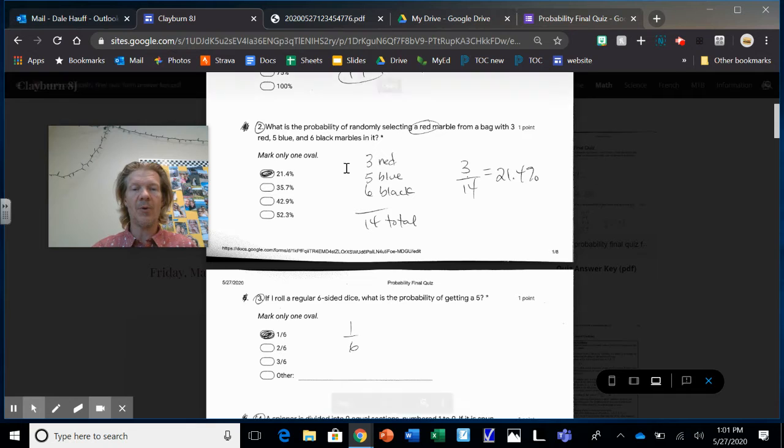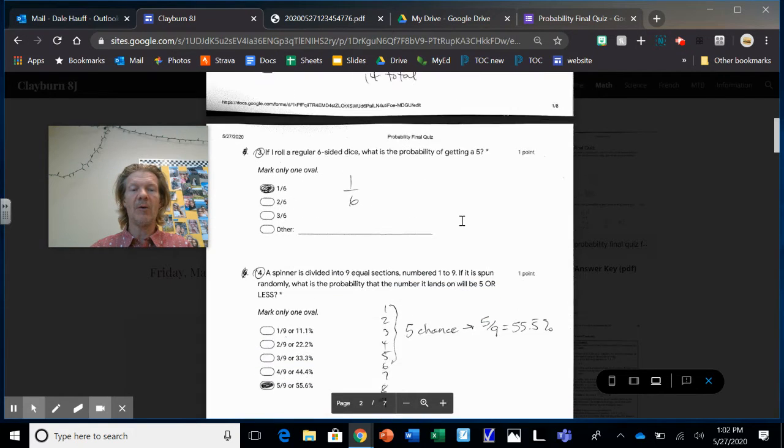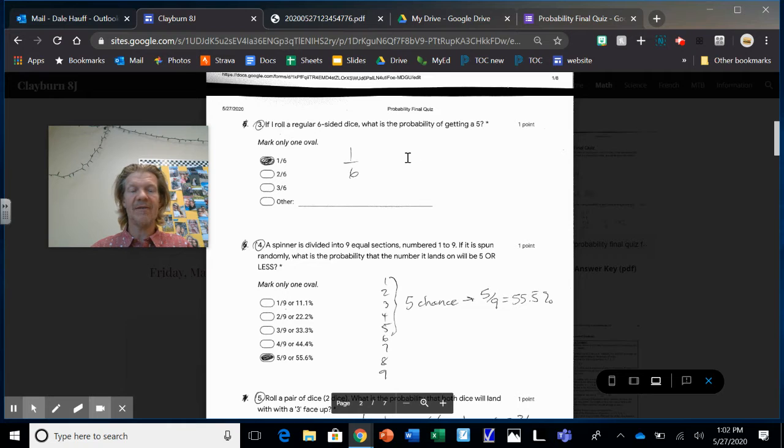Number two, what's the probability of randomly selecting a red marble from a bag with three red, five blue, and six marbles? Well, that means you have 14 marbles total. So the denominator has to be 14 and three red. So three out of 14 are red for 21.4%. If I roll a regular die, what's the chance of getting a five? Well, there's only six outcomes, one two three four five six. So that's the denominator and only one five. So one out of six, that's it.